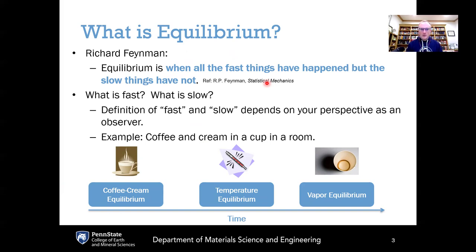It does leave open the question: what is fast and what is slow? The insight here is that the definition of fast versus slow depends on your perspective as an observer — it depends on you as the person conducting the experiment or interacting with the material. From chapter one, we had the example of cream poured into a cup of coffee in a room, where different equilibria occur on different timescales. On a very short timescale,